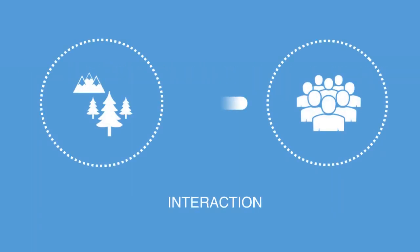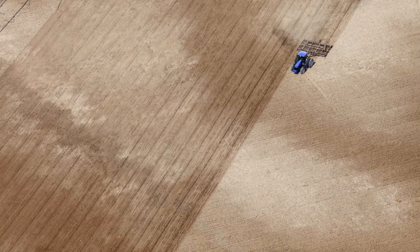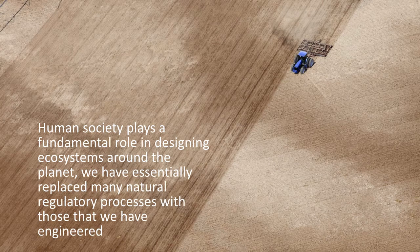Inversely, we can look at the exchange from the economy to the biosphere, which includes both energy, materials, and information. Economies as dissipative systems take in large amounts of energy and materials and export waste material back to the ecosystem. Humans can also be understood as regulators of Earth systems — human society plays a fundamental role in designing ecosystems around the planet. We have essentially replaced many natural regulatory processes with those that we've engineered, whether through altering hydrological cycles through irrigation, nitrogen cycles through agriculture, carbon cycles through combustion, or the sheer movement of biomass.